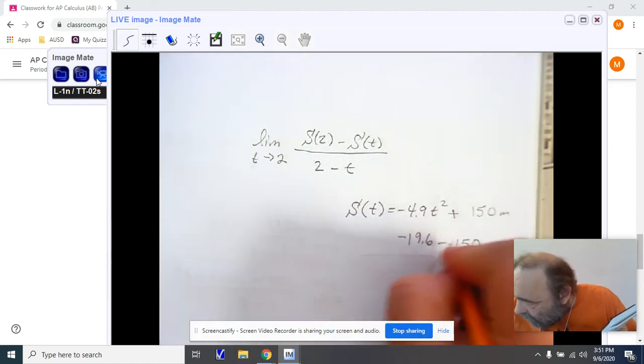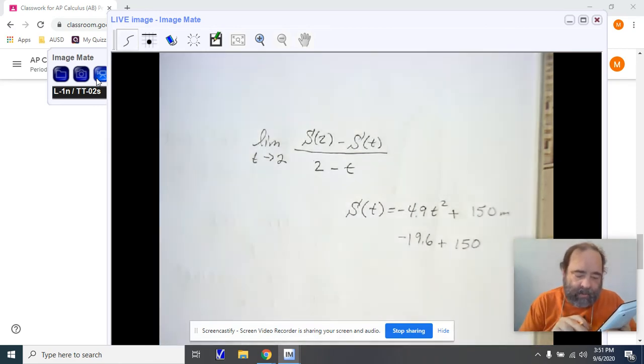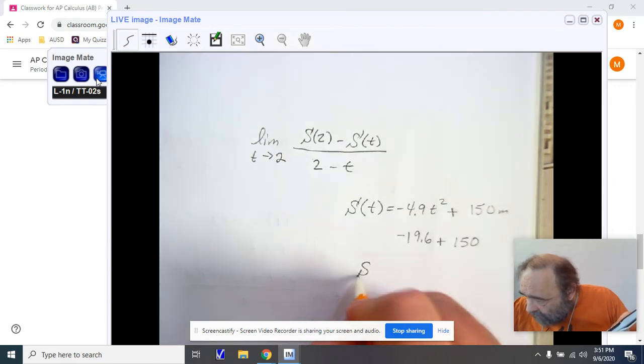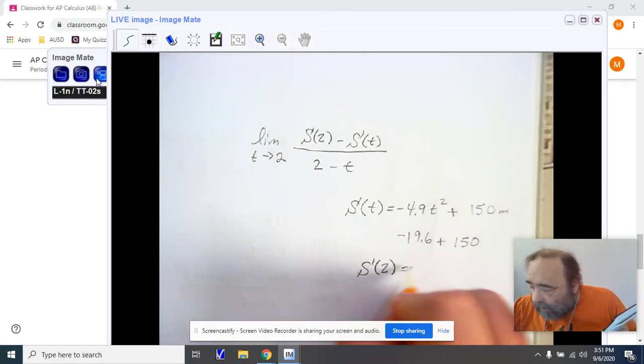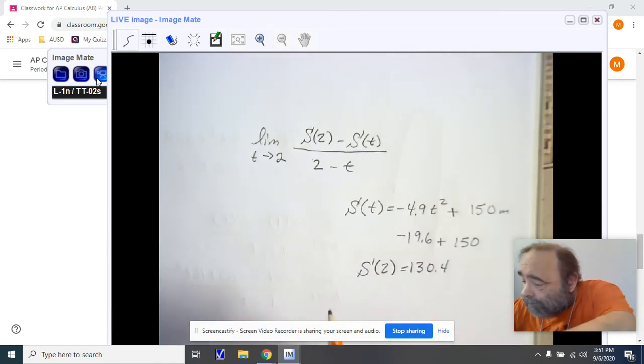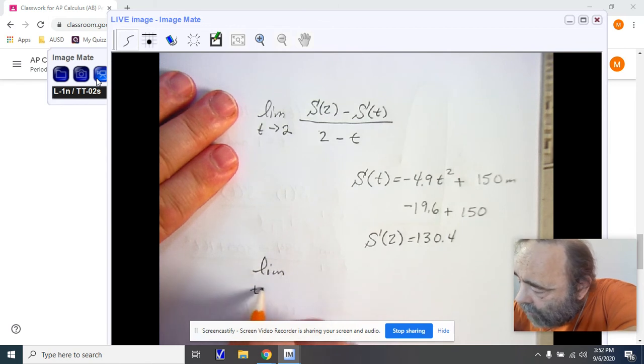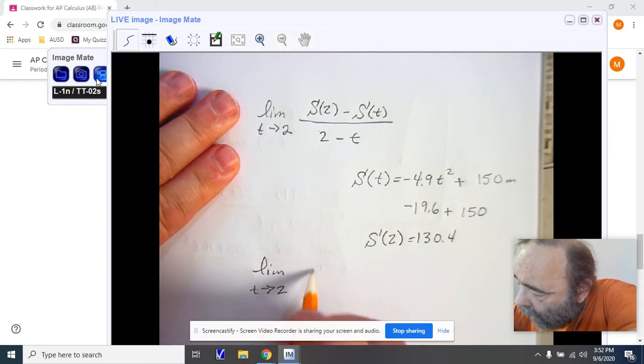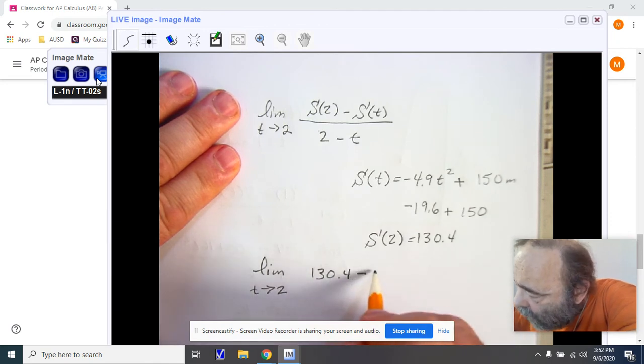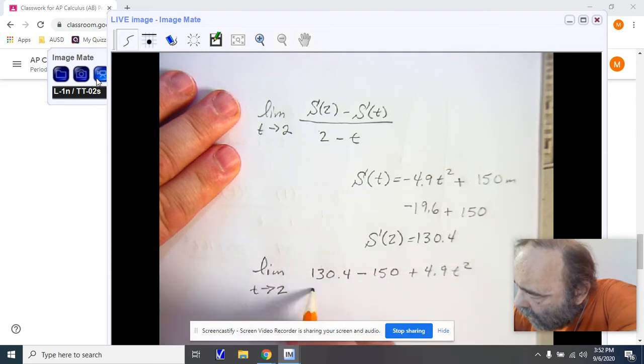Make sure I've got that correct. Oh, that's a height of positive 150. There we go. Plus 150. And I now have s(2) is 130.4. So, here we go.